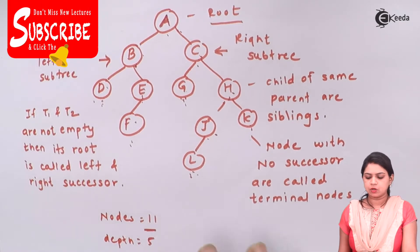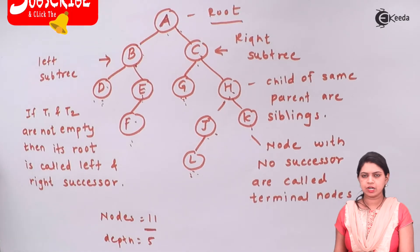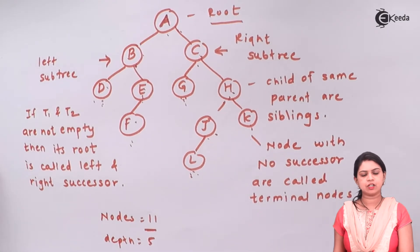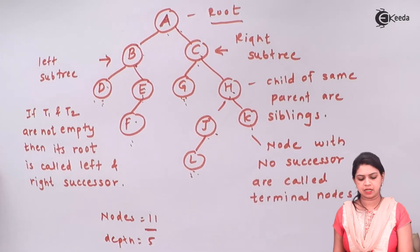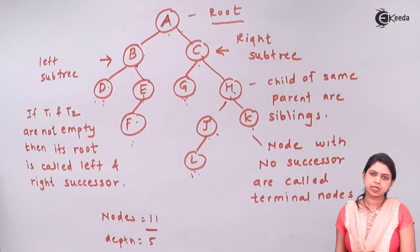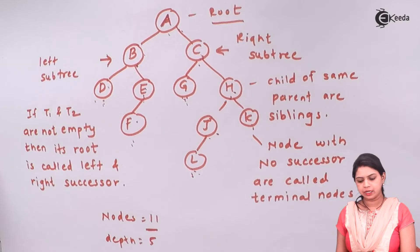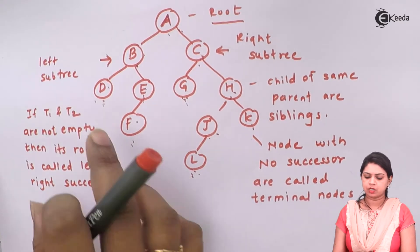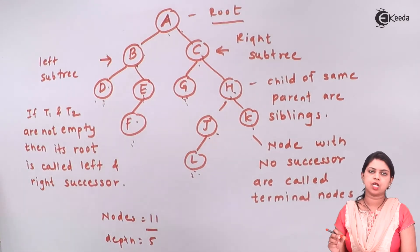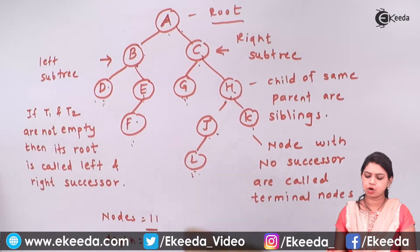A binary tree is defined as a finite set of elements where every element is called a node. A binary tree can be an empty tree, also called a null tree, or it can be classified into a distinguished node with subtrees T1 and T2, where the top of the tree is called the root.